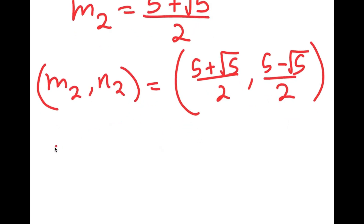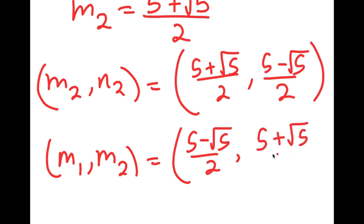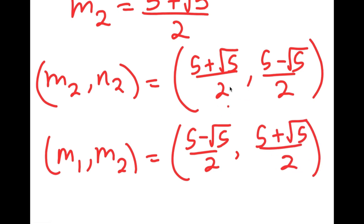My first solution, m1 comma n1, is 5 minus the square root of 5 over 2, comma, 5 plus the square root of 5 over 2. Notice how these two solutions are just the opposites of each other — the second solution m2 comma n2 simply has the values switched in order. So these two are my two solutions.